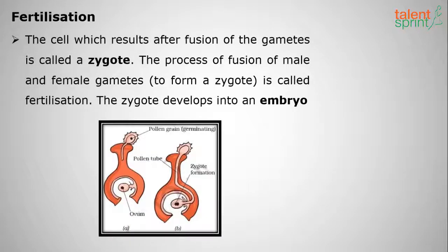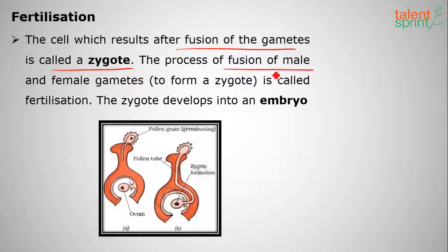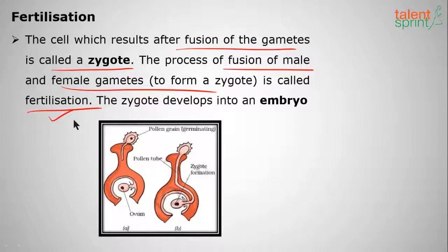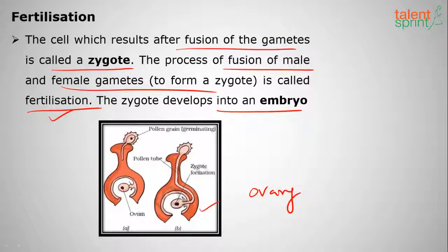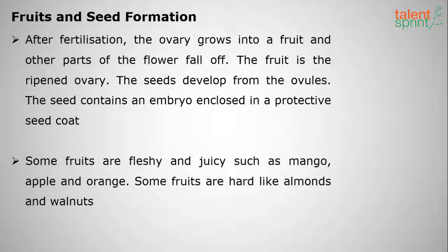After pollination, fertilization takes place. The fusion of male and female gametes forms a cell called a zygote. The process of fusion of male and female gametes to form a zygote is called fertilization. The zygote then develops into an embryo inside the ovary — the female reproductive part of the flower.